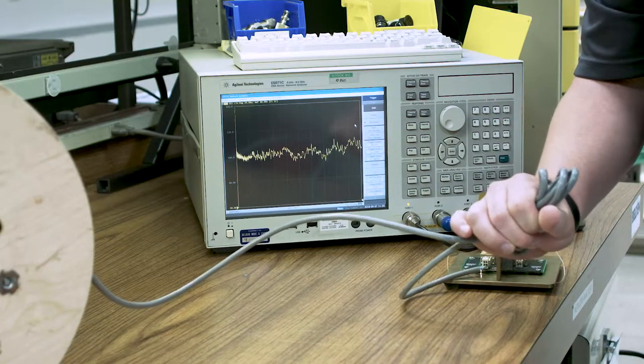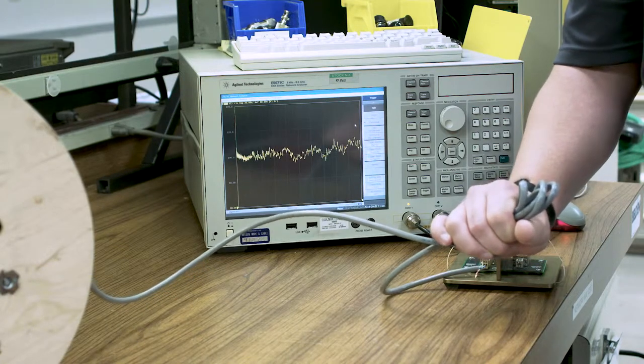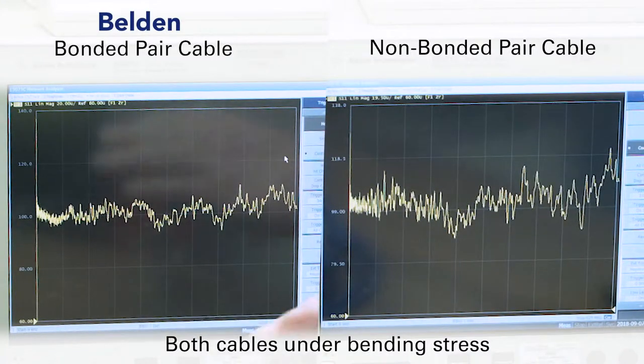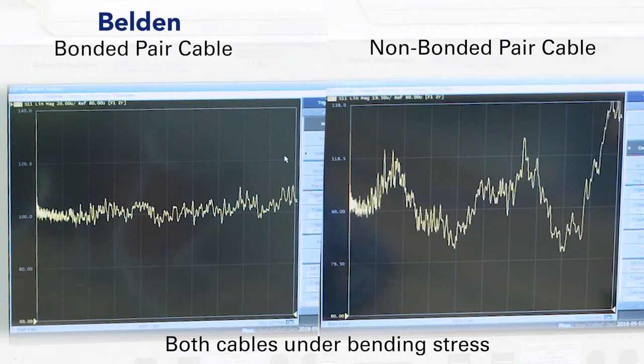After extensive testing cycles, here's what the impedance chart looks like for CAT6 bonded pair cable. From installation onward, the stability of bonded pair cable impedance means more reliable performance for your operation.